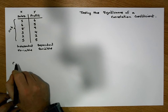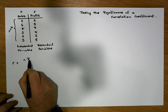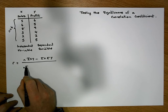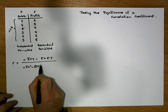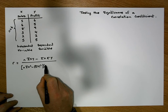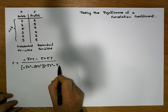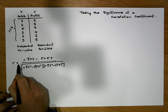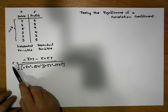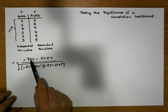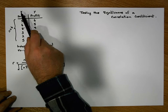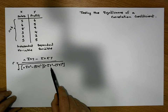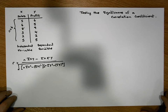The formula for the sample correlation coefficient r is: r equals n times ΣXY minus ΣX times ΣY, divided by the square root of the quantity [n times ΣX² minus (ΣX)²] multiplied by [n times ΣY² minus (ΣY)²]. To calculate this, we need to create an XY column, an X² column, and a Y² column in our table, and calculate the sums of the X, Y, XY, X², and Y² columns.